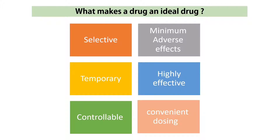The drug has to be effective at a low dose. The fifth characteristic is that it should be controllable — the more controllable the drug, the more ideal it is. The last one is convenient dosing: the drug should be given to the patient at least once or twice a day. If not, it may not be an ideal drug.